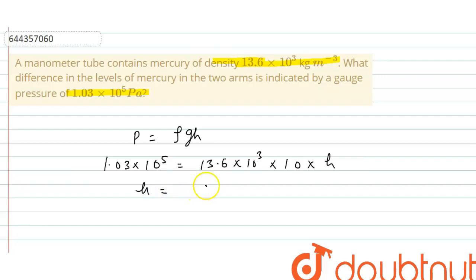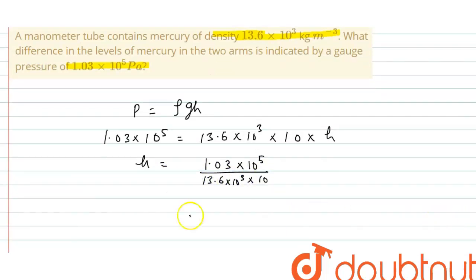h equals 1.03 × 10^5 divided by 13.6 × 10^3 × 10. This equals 75.73 centimeters.